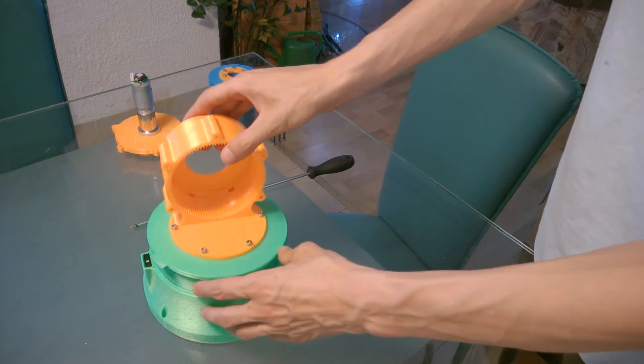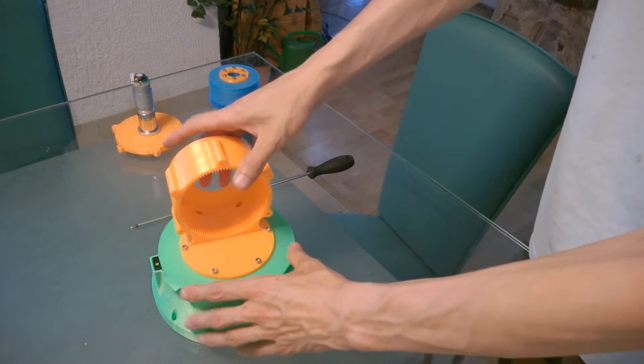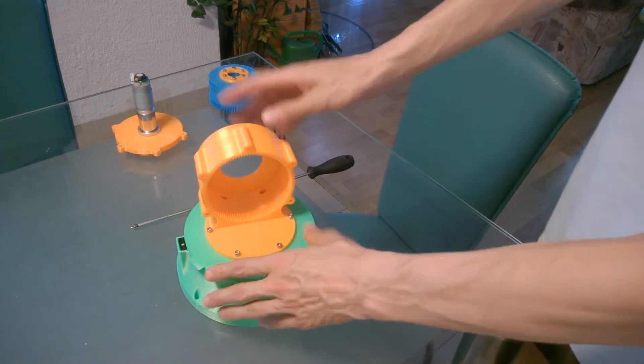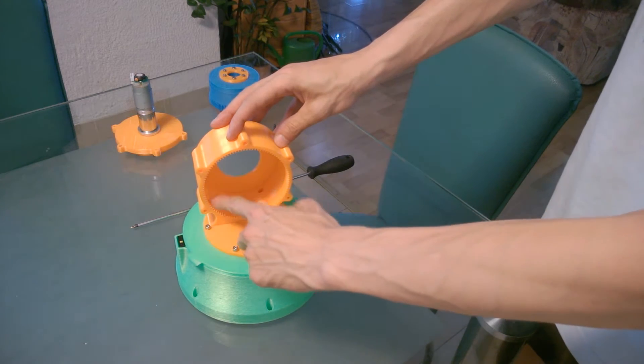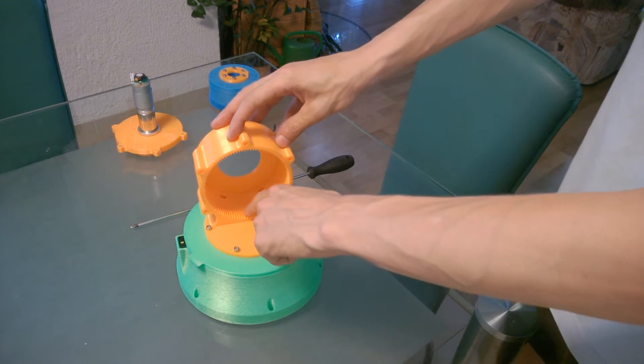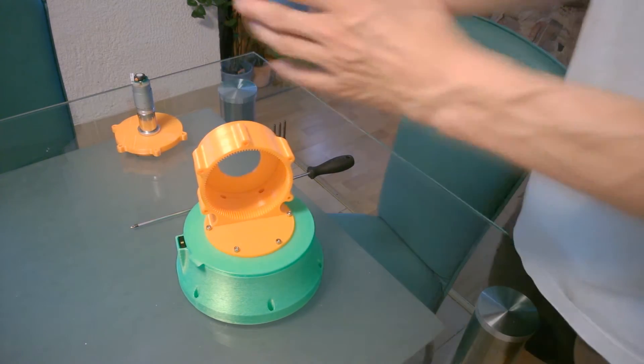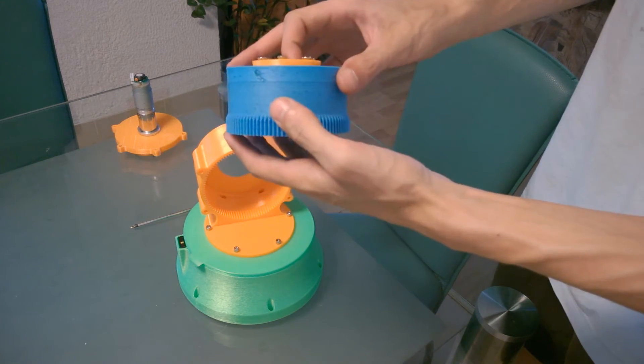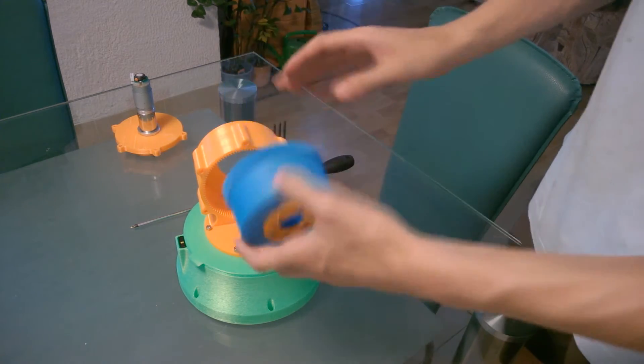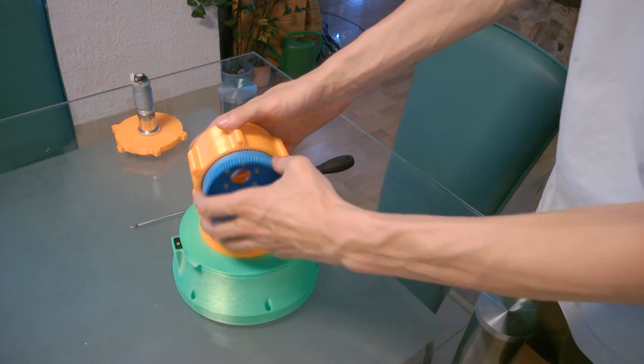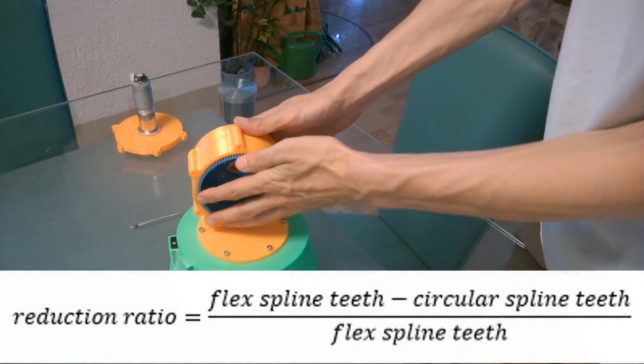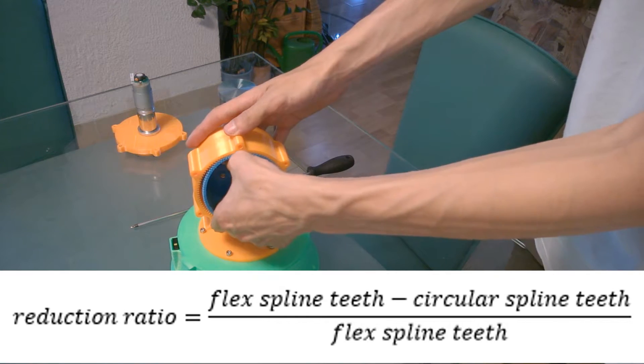This is the second axis. It's a harmonic drive. The circular spline has 100 teeth, the flex spline has 98 teeth, so that gives me a ratio of 1 to 49.